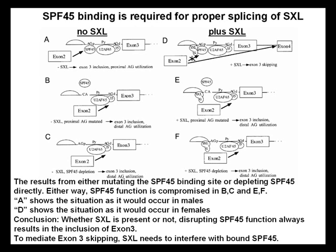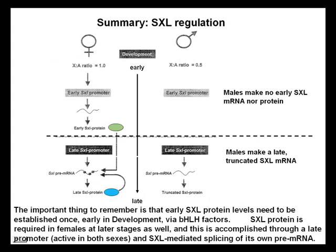Shown are results from either mutating the SPF45 binding site or depleting SPF45 directly. Either way, SPF45 function is compromised in panels B, C, E, and F. Panel A shows the situation as it would occur in males; panel D shows the situation as it would occur in females. Whether SXL protein is present or not, disrupting SPF45 function always results in the inclusion of exon 3. To mediate exon 3 skipping, sex lethal needs to interfere with bound SPF45. Males make only a late truncated sex lethal mRNA, whereas females make the entire transcript except for exon 3 in early development, then switch to the late truncated form in later development.